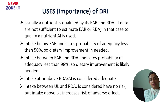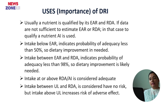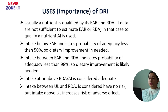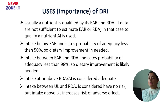Intake below estimated average requirement indicates a probability of adequacy less than 50%, so dietary improvement is needed. Intake between estimated average requirement and recommended dietary allowance indicates probability of adequacy less than 98%, so dietary improvement is less likely to be needed. Intake above RDA and AI is considered adequate. Intake between tolerable upper intake level and RDA is considered to have no risk, but intake above tolerable upper intake level increases the risk of adverse effects.